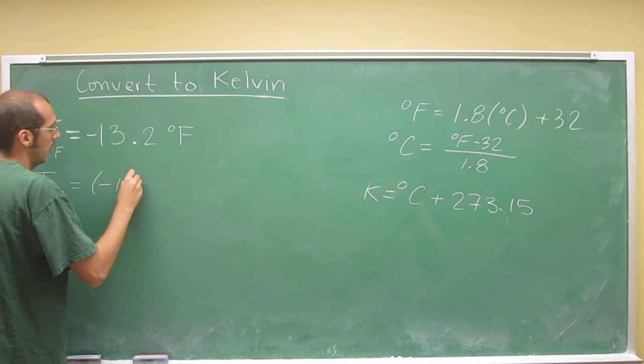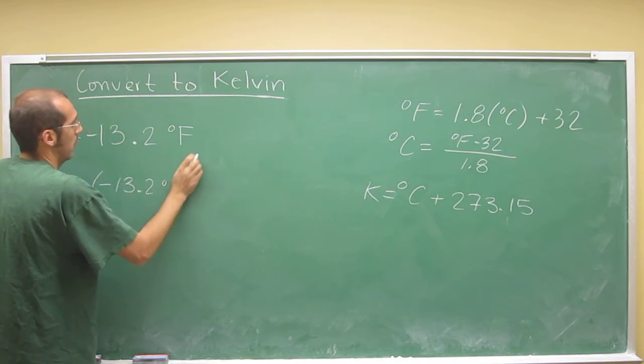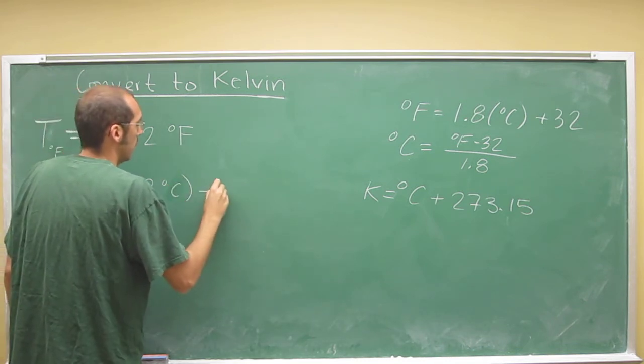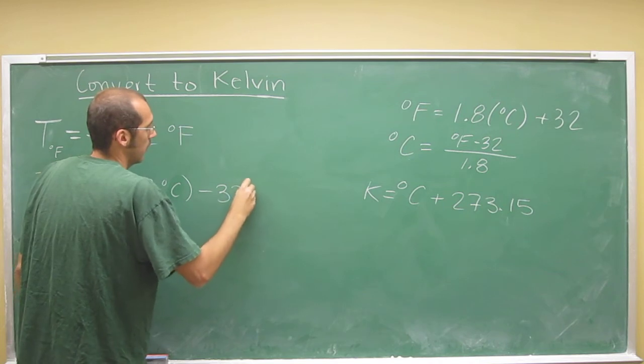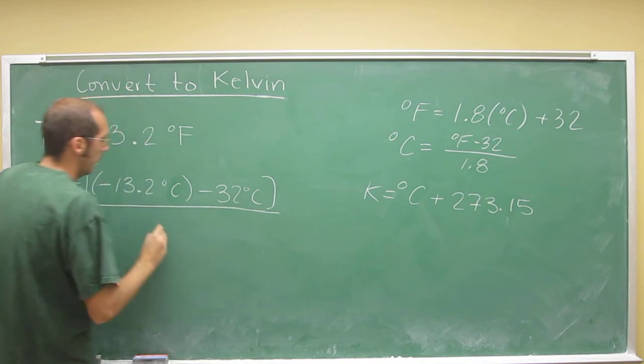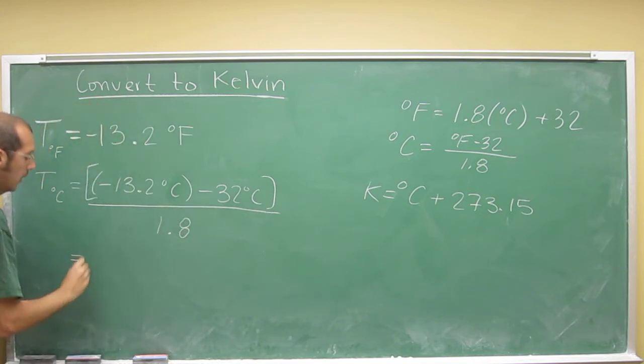So, negative 13.2 degrees Fahrenheit minus 32, divided by 1.8, equals...